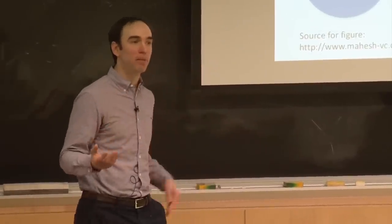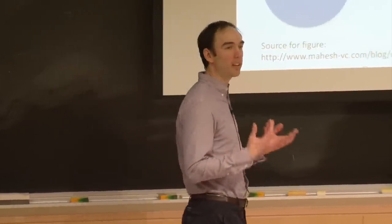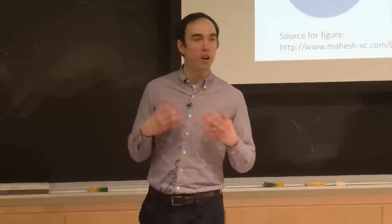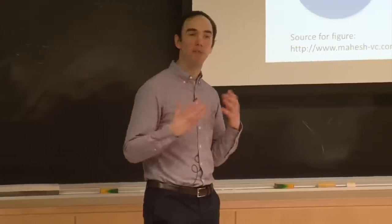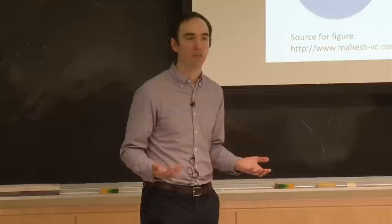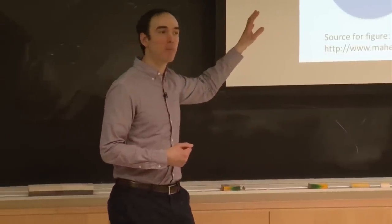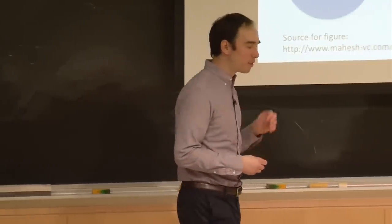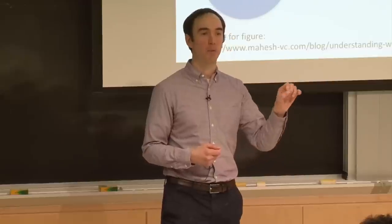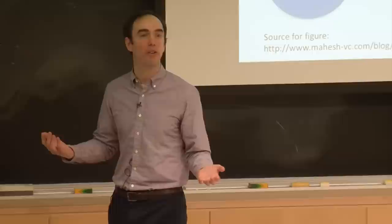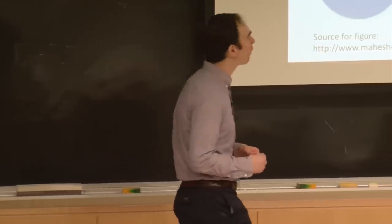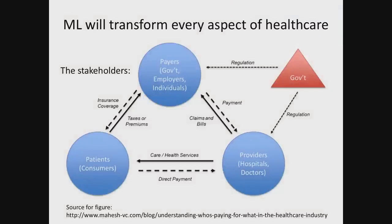Understanding this ecosystem in lecture one is important because what's so essential is figuring out where are the knobs you can turn to improve healthcare — where can we deploy machine learning algorithms? Some algorithms will be better run by providers, others by payers, others delivered directly to patients. We also have to think about industrial questions: what will it take to develop a new product, and who will pay for it?